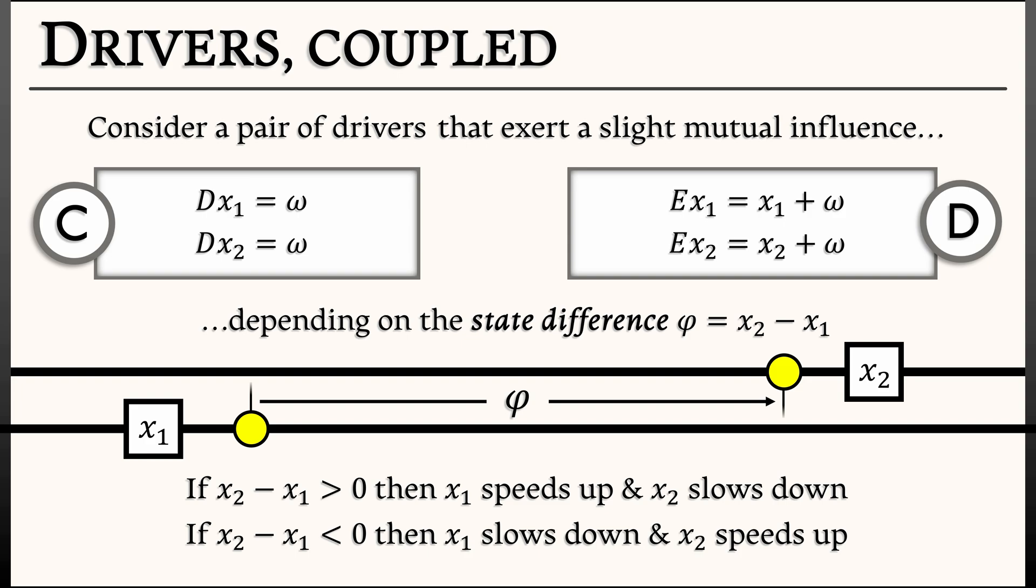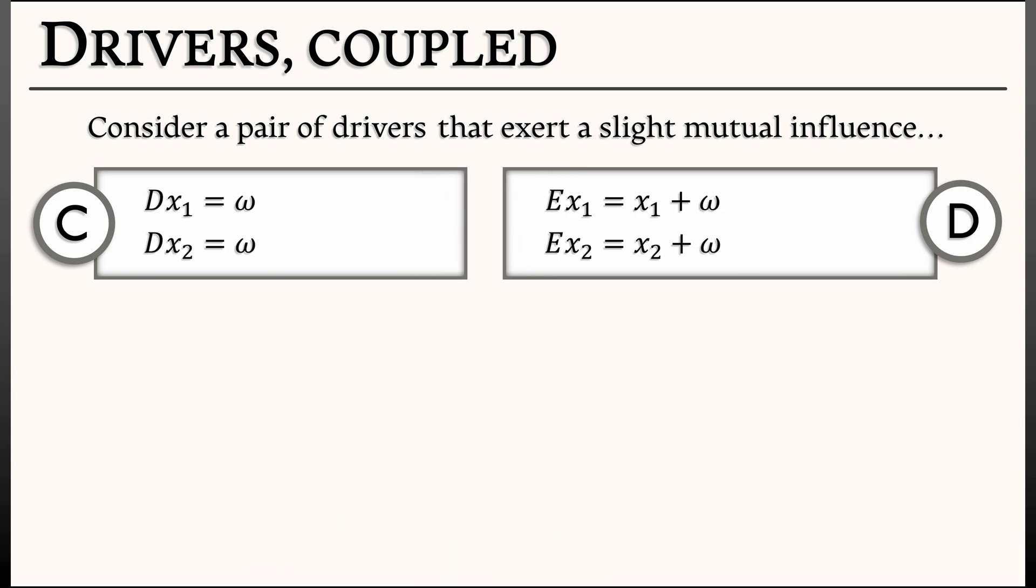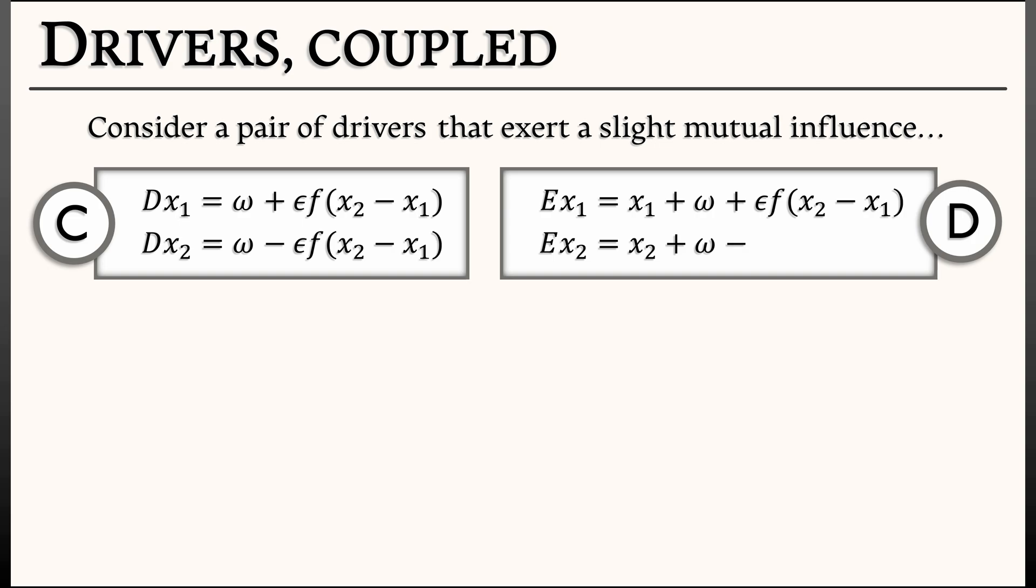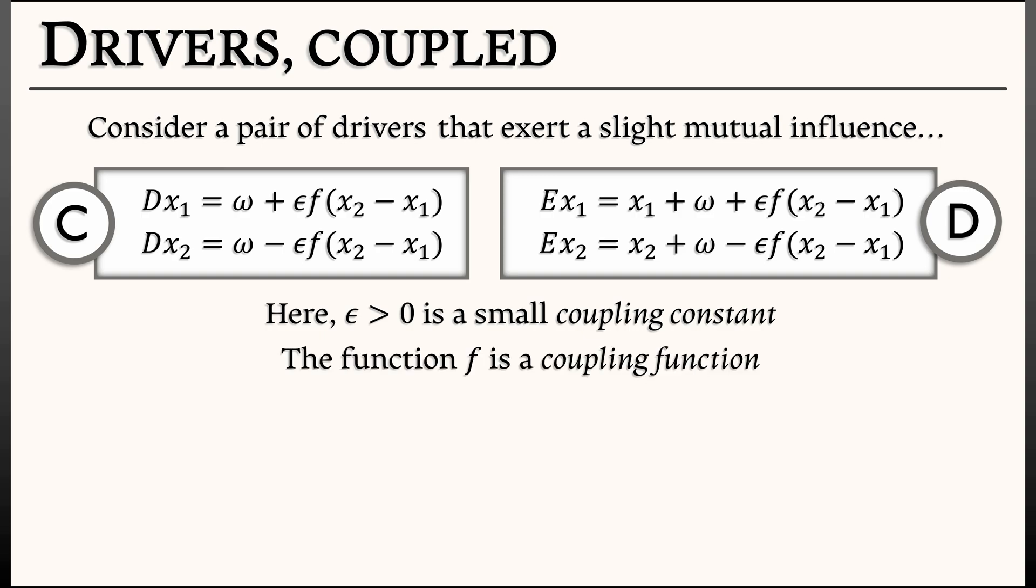The way that we're going to make this work is that we're going to add or subtract a small term to the right-hand sides of these uncoupled systems. These are going to be of the form epsilon times f of phi, f of x2 minus x1, where epsilon is going to be a very small constant, a coupling constant. And this function f on the right-hand side is what we might call a coupling function. The thing that tells you what kind of influence you have.